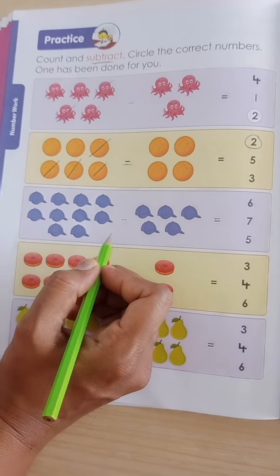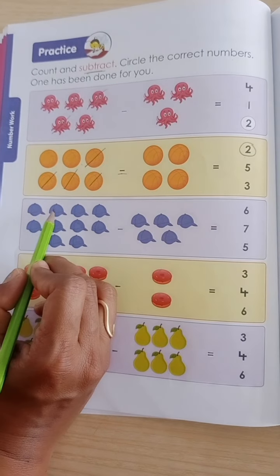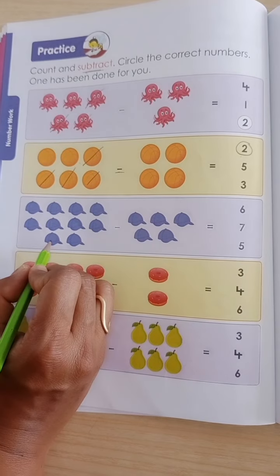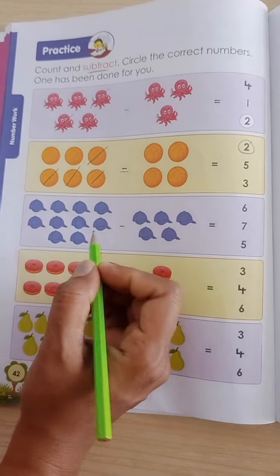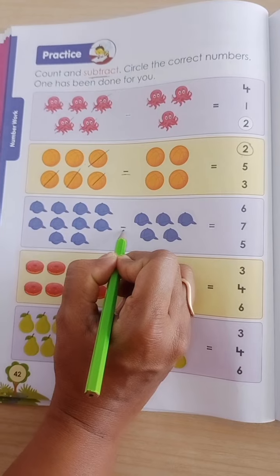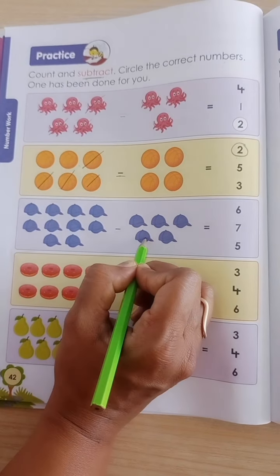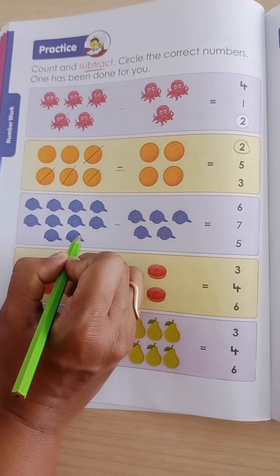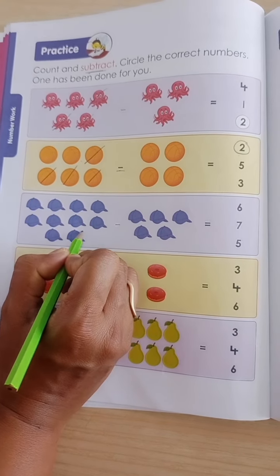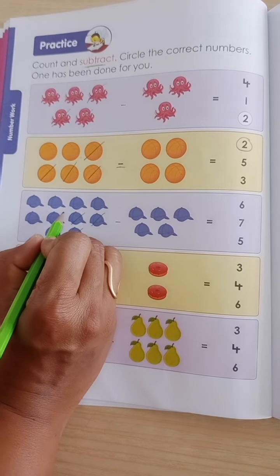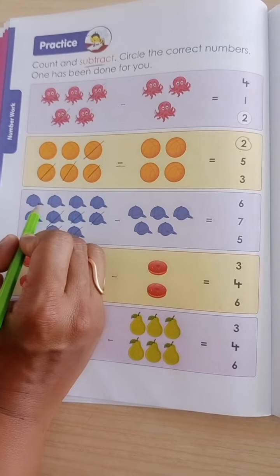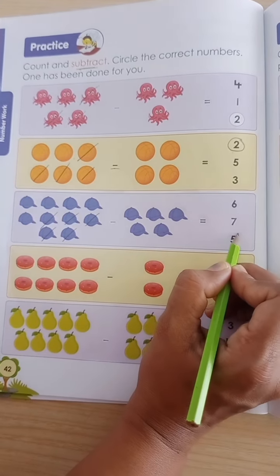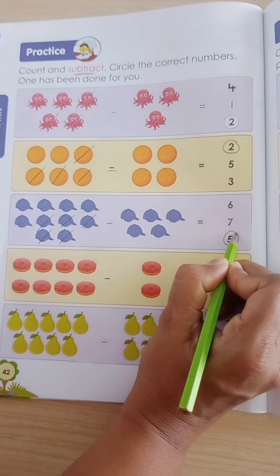Now here, how many caps are there? Let's count: 1, 2, 3, 4, 5, 6, 7, 8, 9, 10. Now we have to separate from it: 1, 2, 3, 4, 5. Now how many caps are left? 1, 2, 3, 4, 5. So circle 5. Five is the answer.